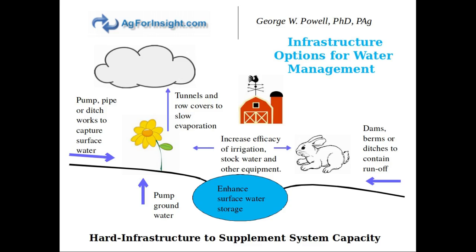We have a lot of options to supplement our water needs in agriculture, and I separate them into hard infrastructure and soft infrastructure. Hard infrastructure refers to investments in equipment or earthworks that supplement the system's capacity to capture and store water — for example, we can pump, pipe, or use ditches to capture more surface water; use tunnels or row covers to slow evaporation; pump groundwater to the surface; enhance surface water storage with larger reservoirs; use dams, berms, or ditches to contain water; and invest in equipment that is more efficient in delivering water for irrigation, stock water, or otherwise.